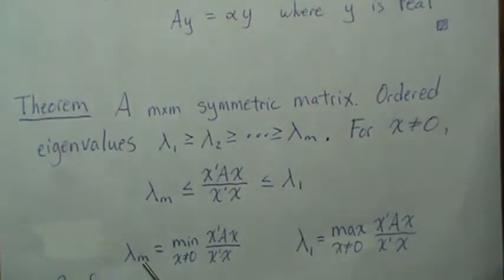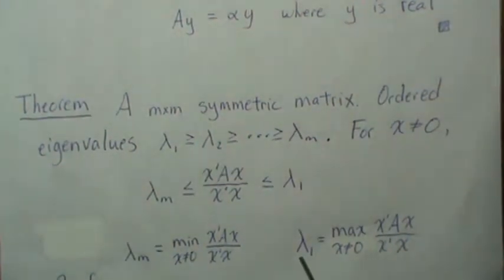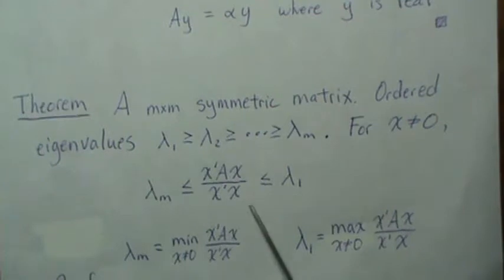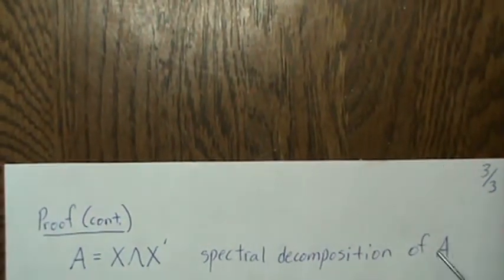So what we'll prove is this inequality and then we'll show that the min and the max can be achieved. So the proof is this: let's let this be the spectral decomposition of A.